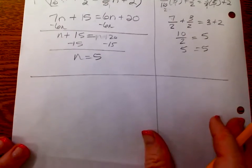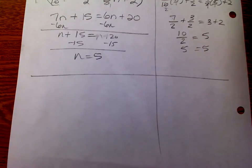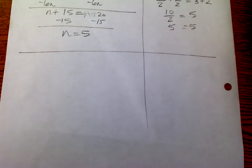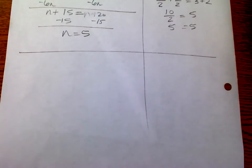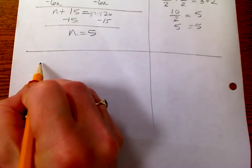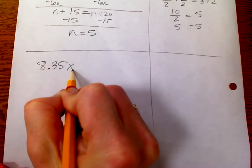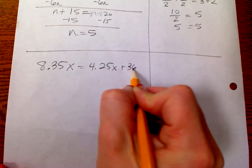Now let's look at a decimal example. Here is one: 8.35x equals 4.25x plus 36.90.